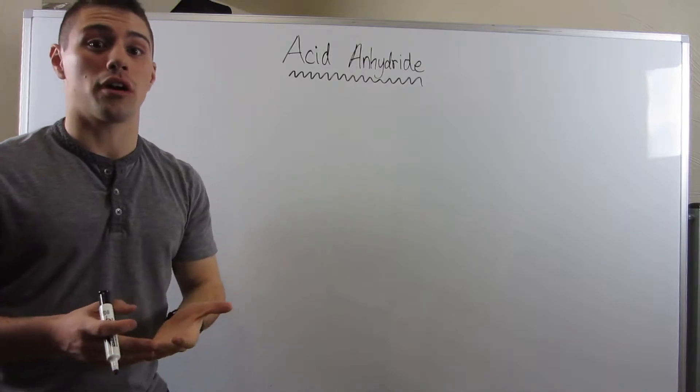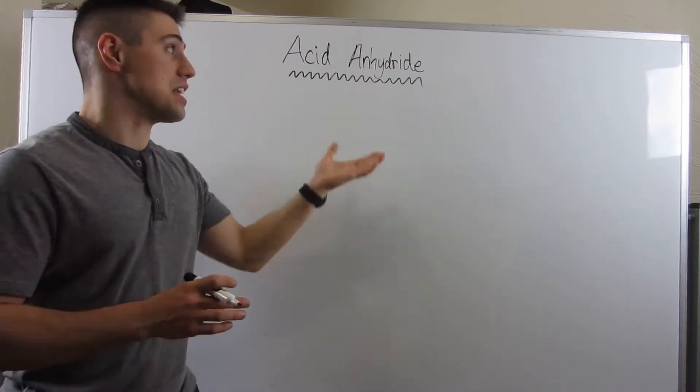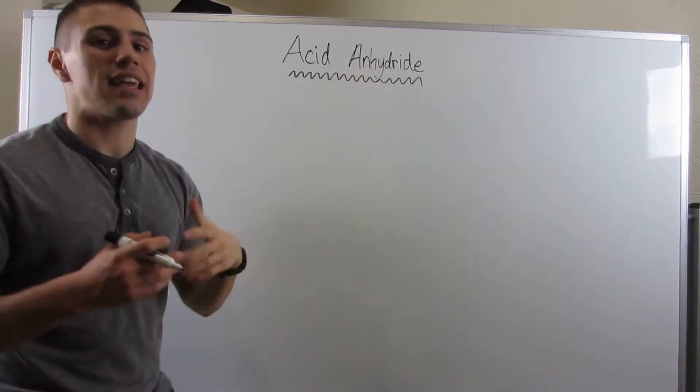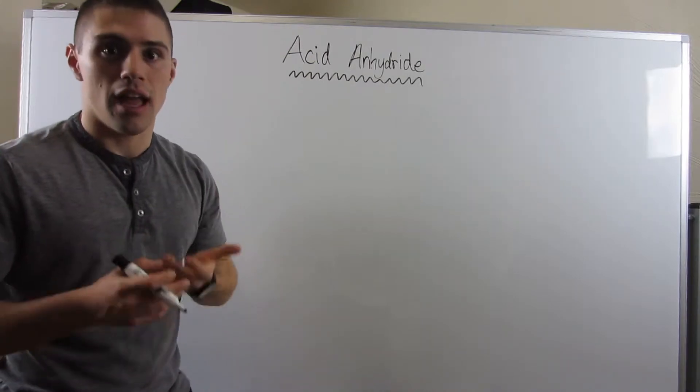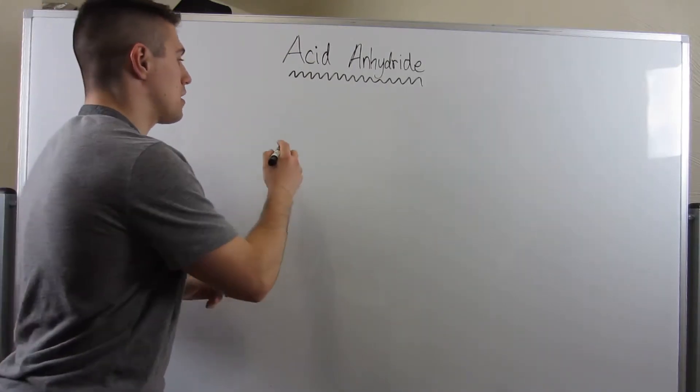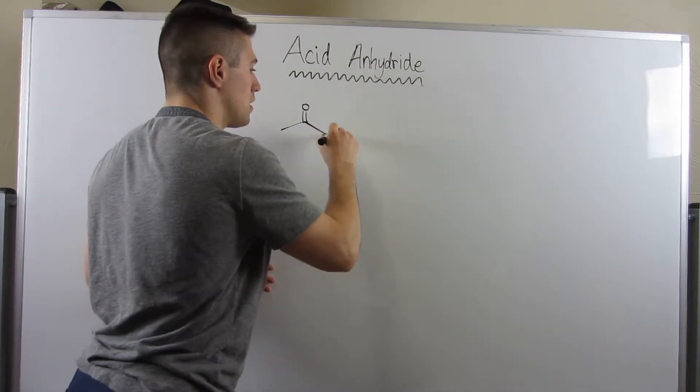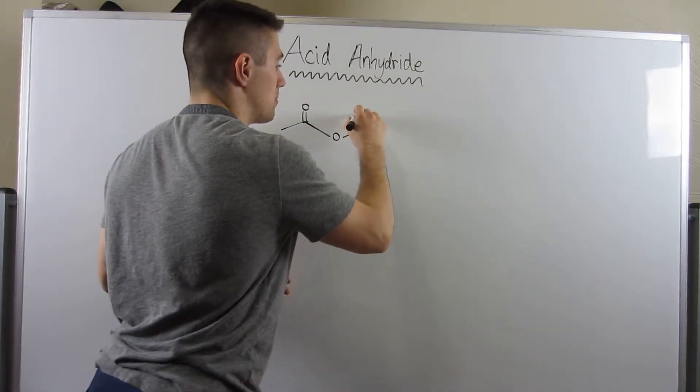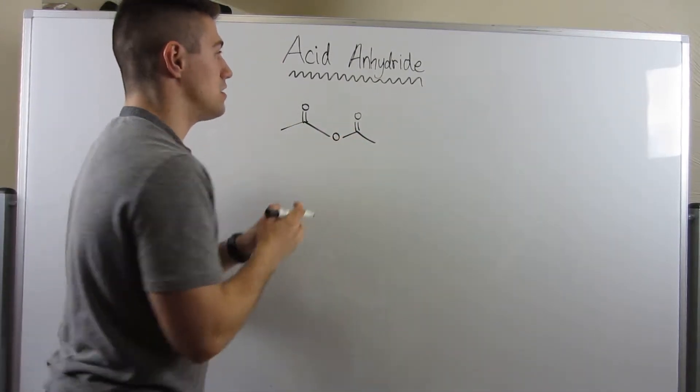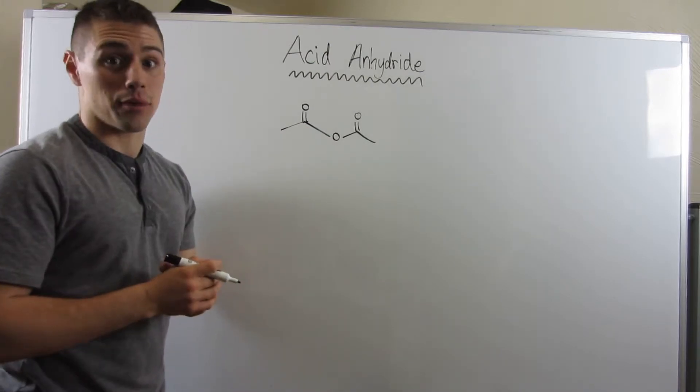Now the beautiful part about acid halides and acid anhydrides is that they act almost identically and you'll see what I mean. Okay, so I'm just going to draw a generic symmetrical, right, symmetrical because we have the same thing on both sides. This is an acid anhydride.